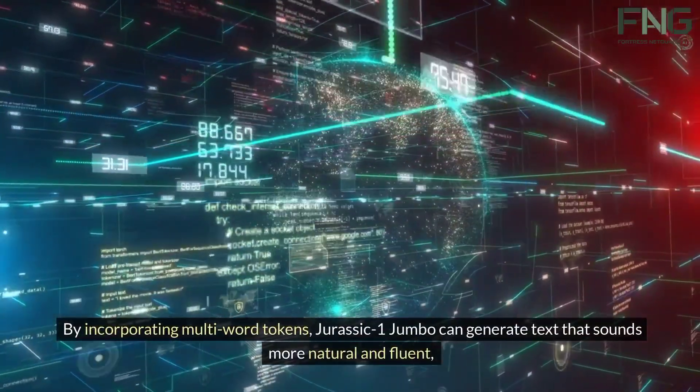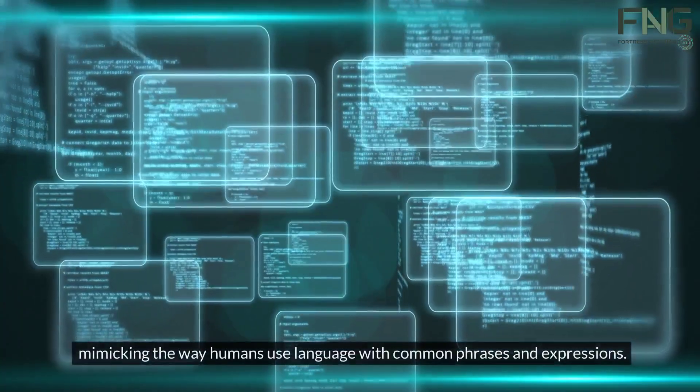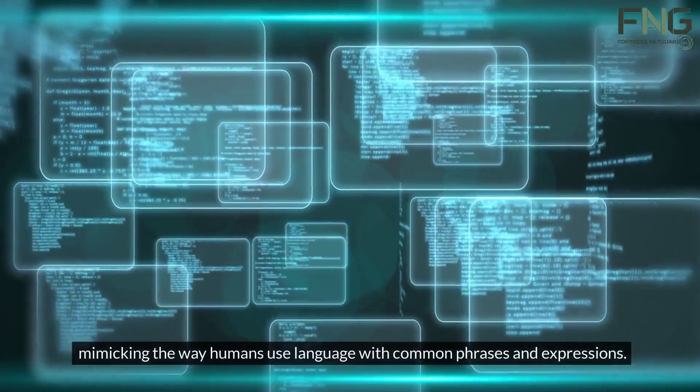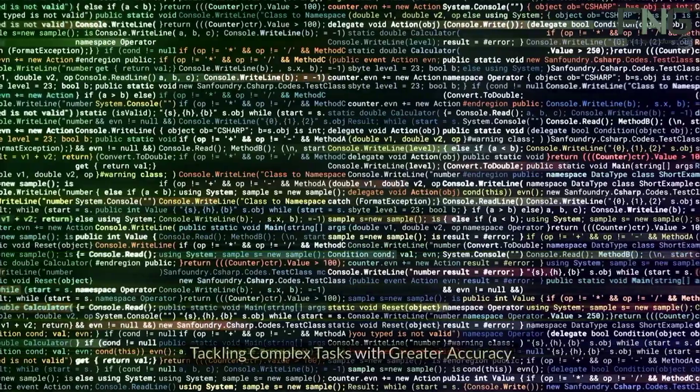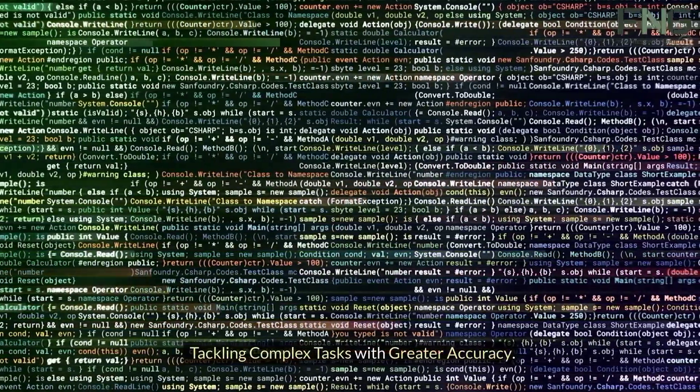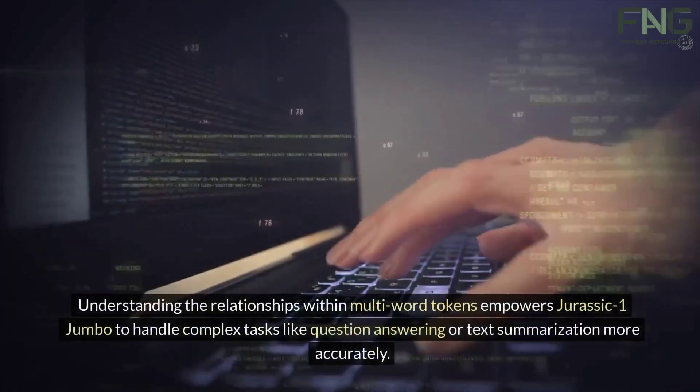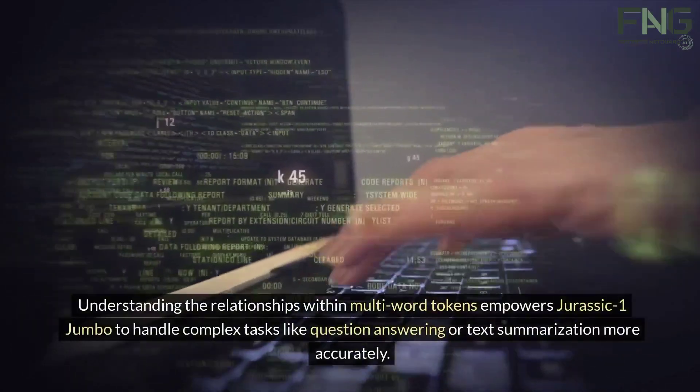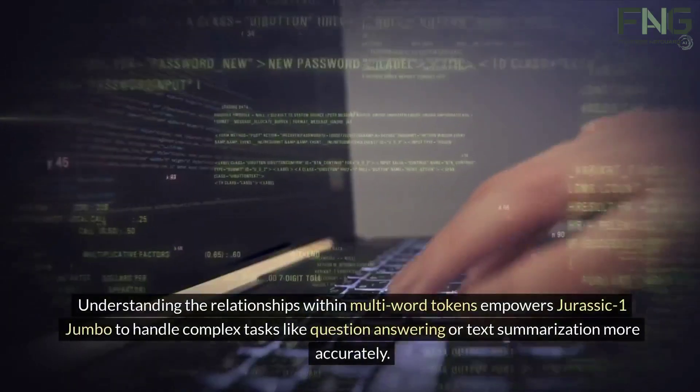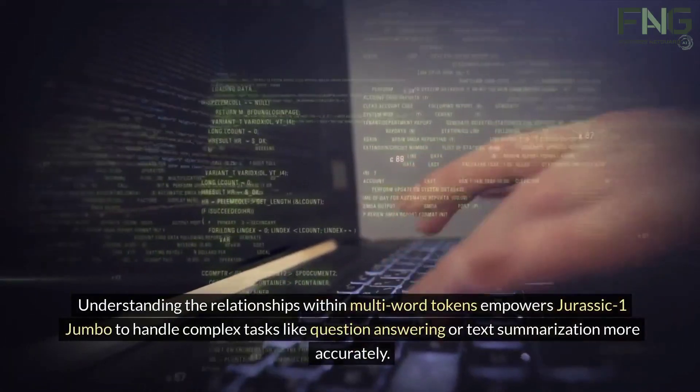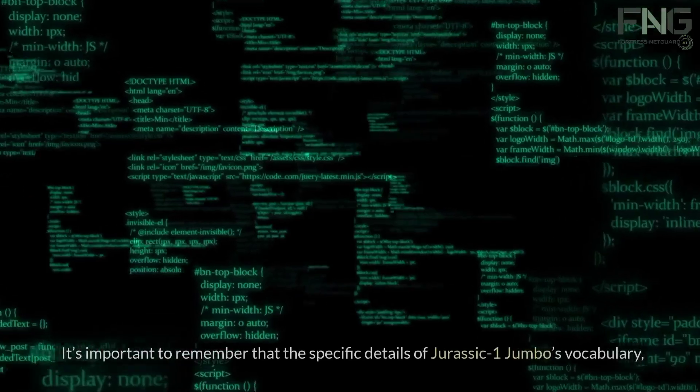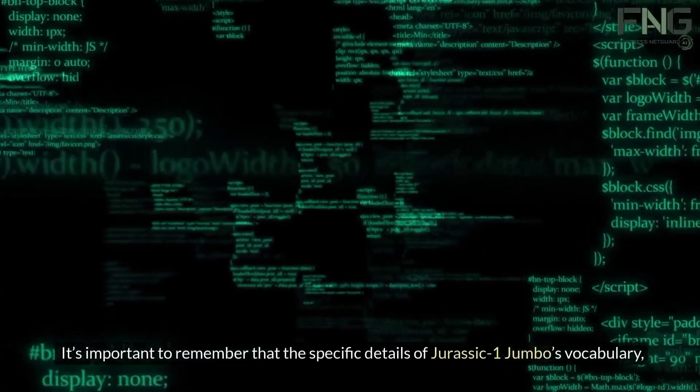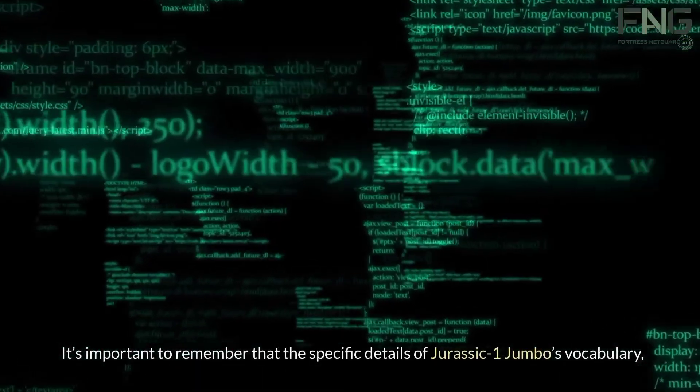This allows for more human-quality text generation. By incorporating multi-word tokens, Jurassic-1 Jumbo can generate text that sounds more natural and fluent, mimicking the way humans use language with common phrases and expressions. It enables tackling complex tasks with greater accuracy. Understanding the relationships within multi-word tokens the way humans do empowers Jurassic-1 Jumbo to handle complex tasks like question answering or text summarization more accurately.